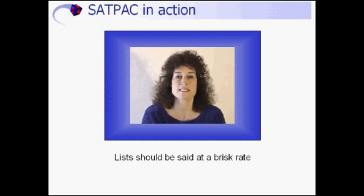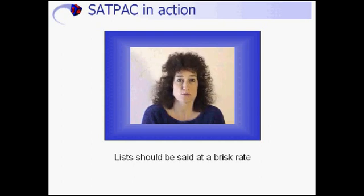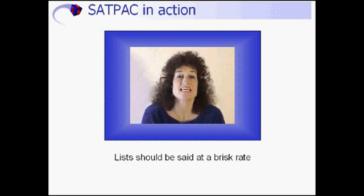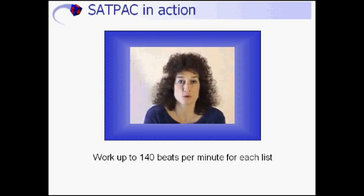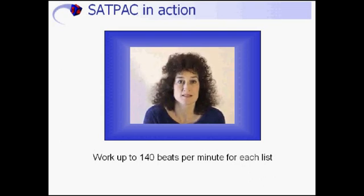It is important that the lists be set at a brisk rate in order for transfer to real conversation to occur. Observing articulation therapy in general, practice is too slow — the student says 'I like soup' or 'I need my sock,' then they leave the session and speak at their normal rate. I use a metronome and work up to 140 beats per minute before proceeding to the next list. It's a good idea to leave a few beats in between words to allow the therapist and the student time to process the response, and also gives the therapist time to look at the next word on the list.